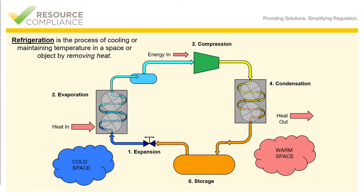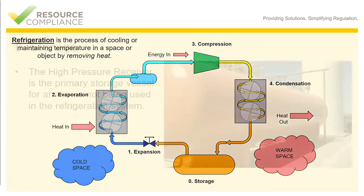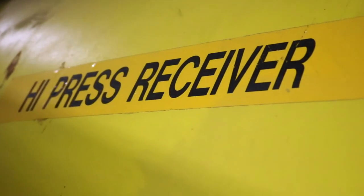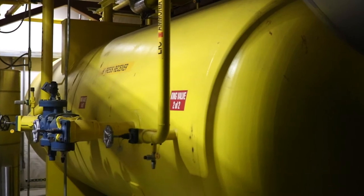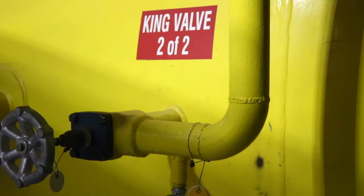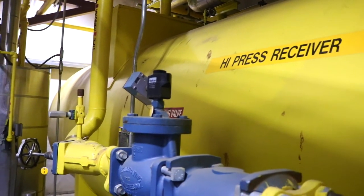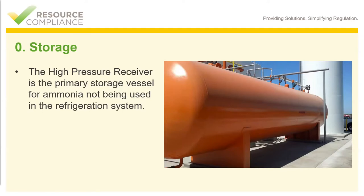In the real world of cold storage, warehouses, and wineries, a storage vessel really is a necessary component. The high pressure receiver, commonly referred to as the HPR, is the primary storage vessel for ammonia that is not being used out in the system. It's important to note that this vessel, or any pressure vessel, should never contain more than 85 percent of its total capacity. The reason for this is vapor expansion — as ambient temperatures rise, the high pressure liquid ammonia inside the vessel may expand, causing an increase in pressure.